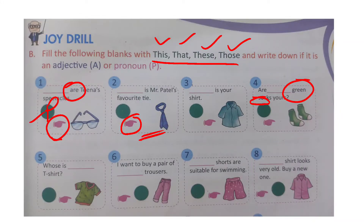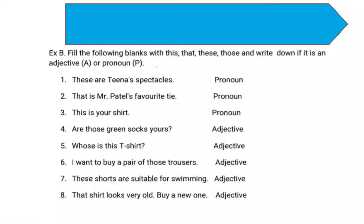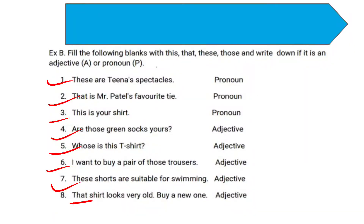Now fill your answers in the book. The answers are: 1. 'These are Tina's spectacles' — Pronoun. 2. 'That is Mr. Patel's favorite tie' — Pronoun. 3. 'This is your shirt' — Pronoun. 4. 'Are those green socks yours?' — Adjective. 5. 'Whose is this t-shirt?' — Adjective. 6. 'I want to buy a pair of those trousers' — Adjective. 7. 'These shorts are suitable for swimming' — Adjective. 8. 'That shirt looks very old, buy a new one' — Adjective. Fill your answers carefully.